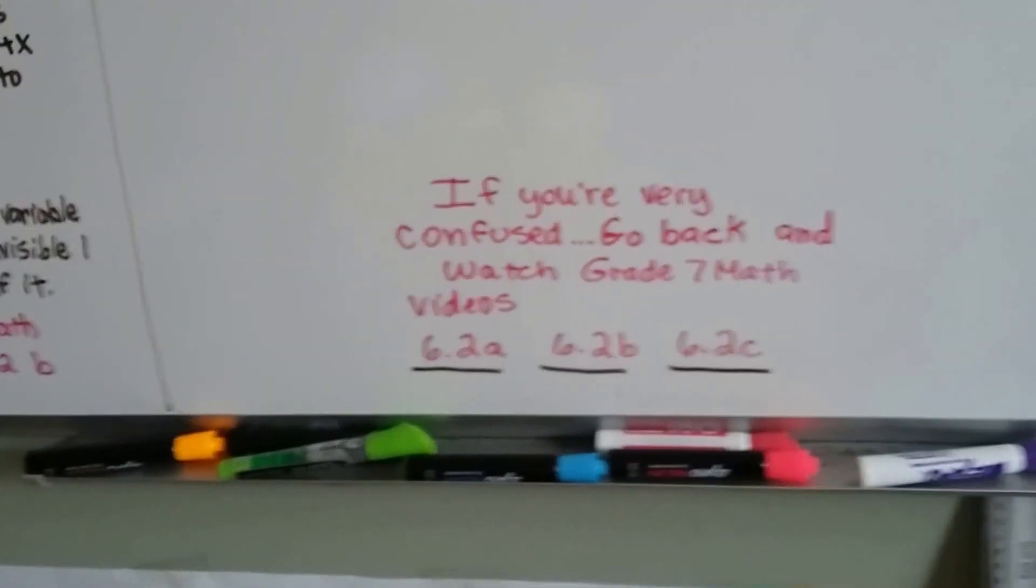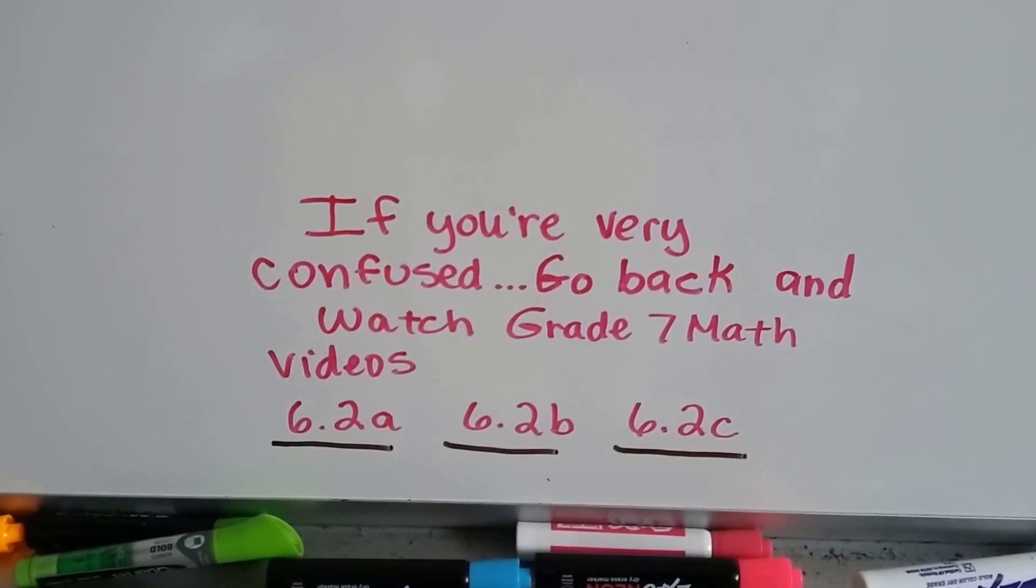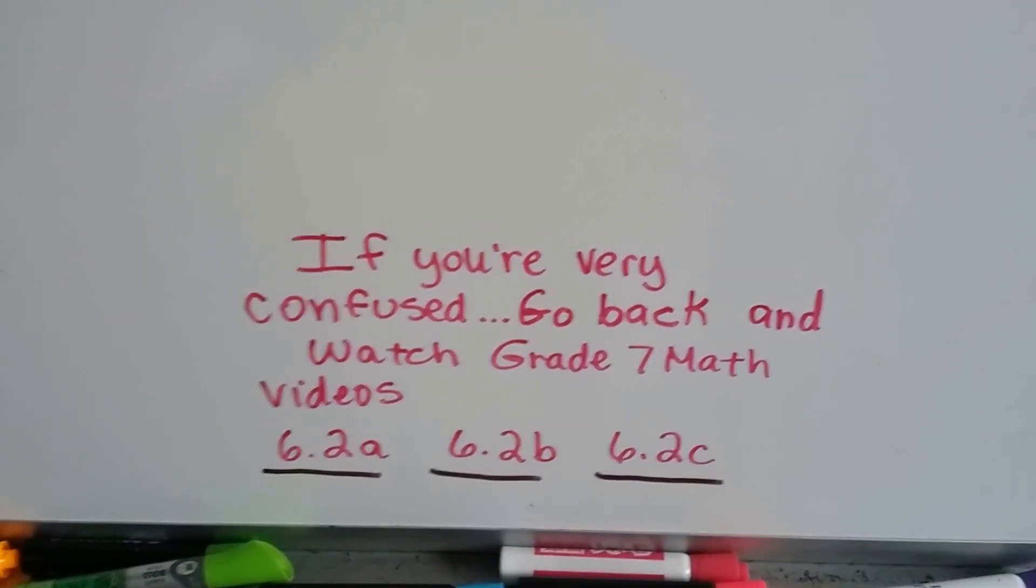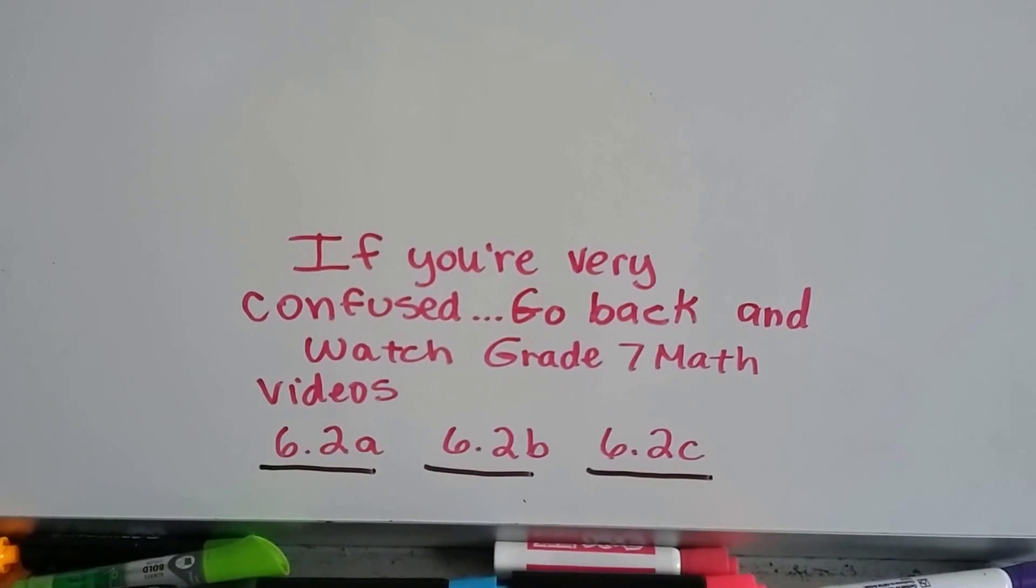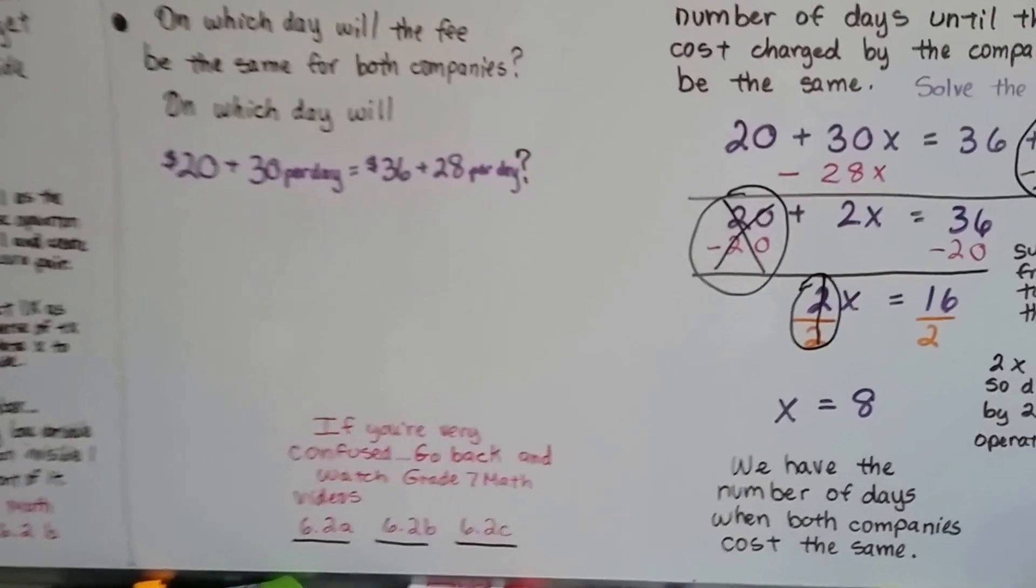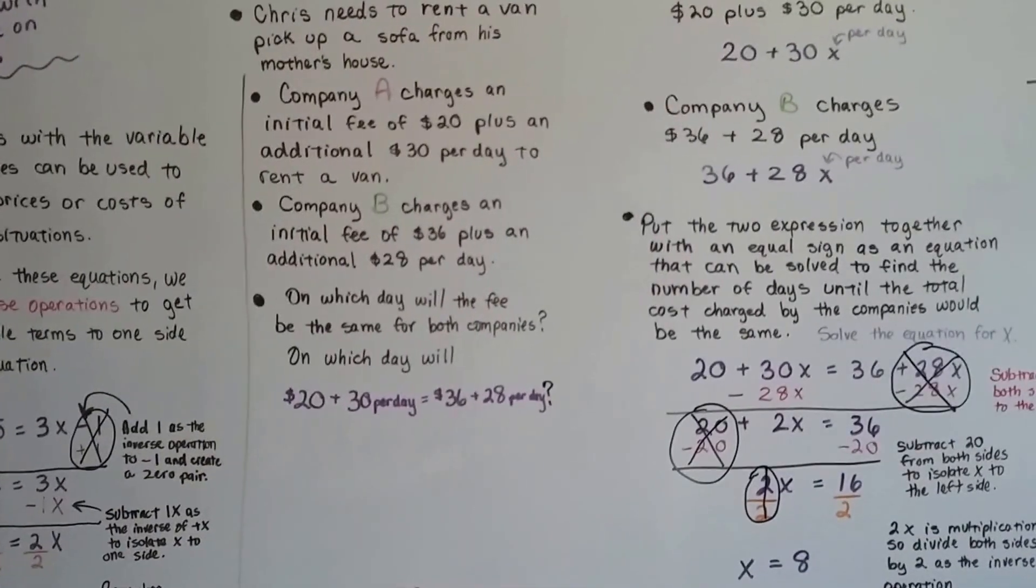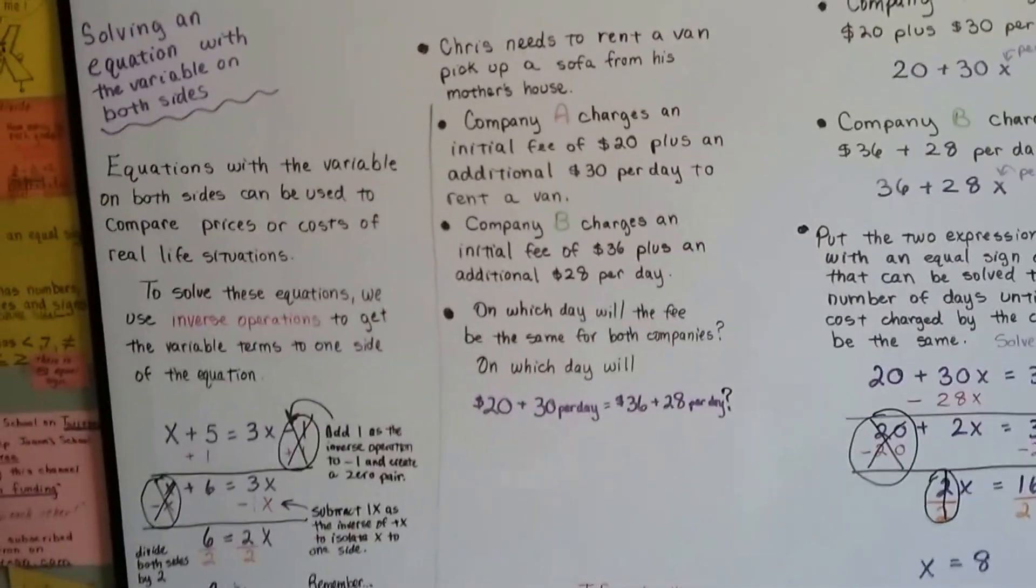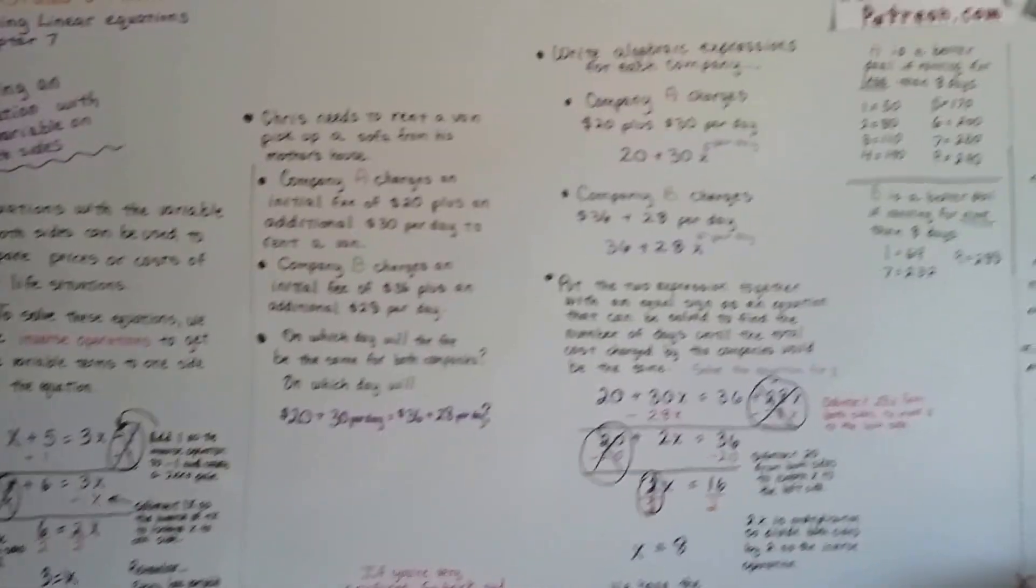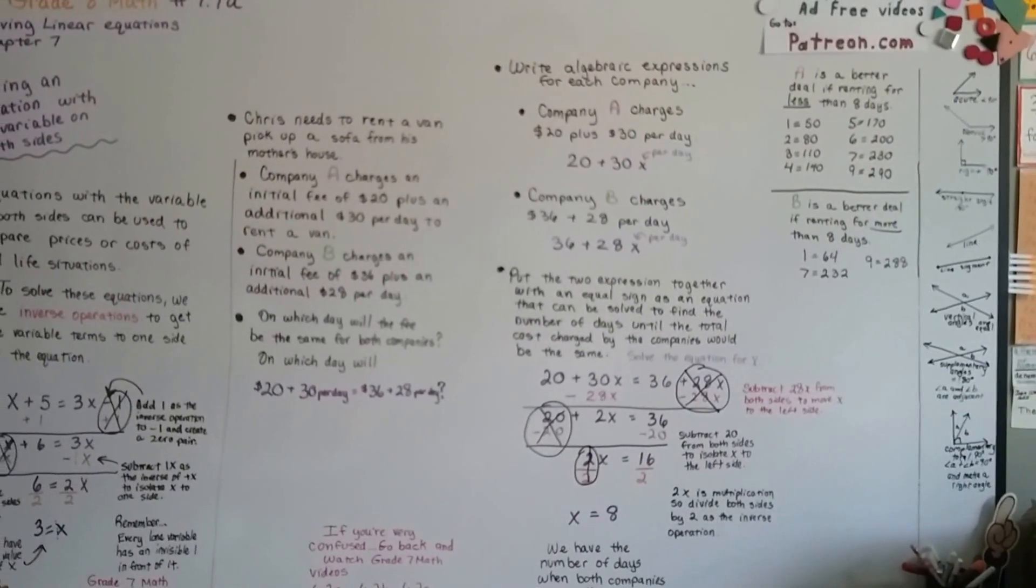Now, if you're very confused, my advice is to go back and watch three videos in Grade 7 Math in the playlist: 6.2A, 6.2B, and 6.2C. Those three little videos, and they're not that long, are going to clear everything up for you and you'll be able to move forward. All right. I hope that was helpful. We're going to continue on with this topic and we're going to talk about writing a real-world situation from an equation, sort of like what we did this time. We're going to continue on and build on our knowledge. I'll see you in 7.1B. Bye.